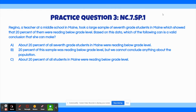Practice question number three says: Regina, a teacher at a middle school in Maine, took a large sample of 7th grade students in Maine, which showed that 20% of them were reading below grade level. Based on this data, which of the following is a valid conclusion that she can make? A: About 20% of all 7th grade students in Maine were below grade level. B: 20% of this sample was reading below grade level, but we cannot conclude anything about the population. C: About 20% of all students in Maine were reading below grade level.